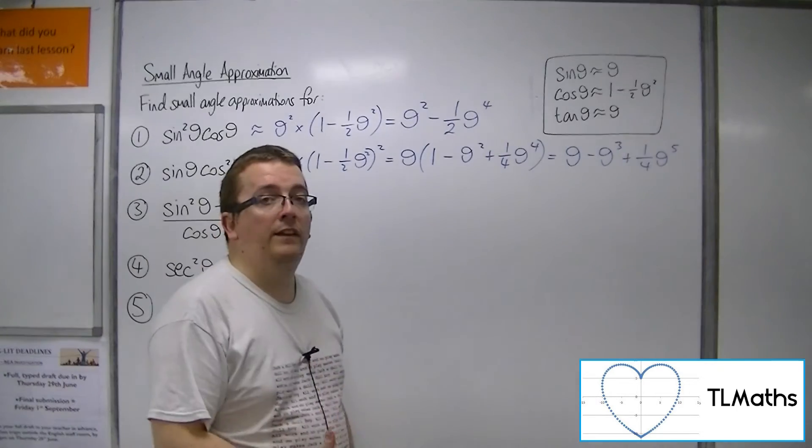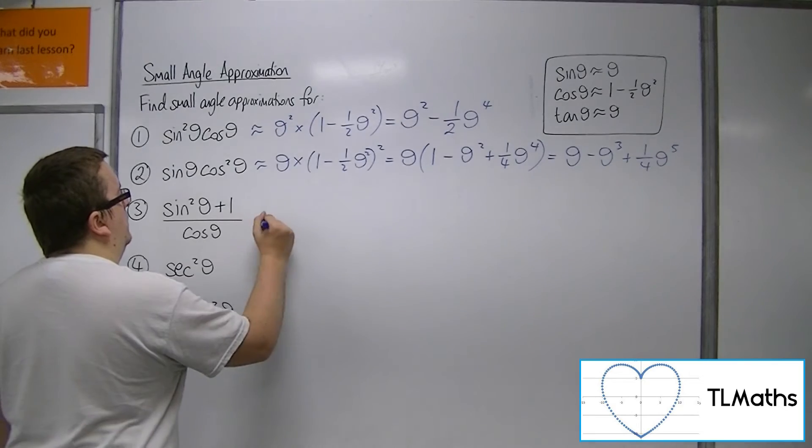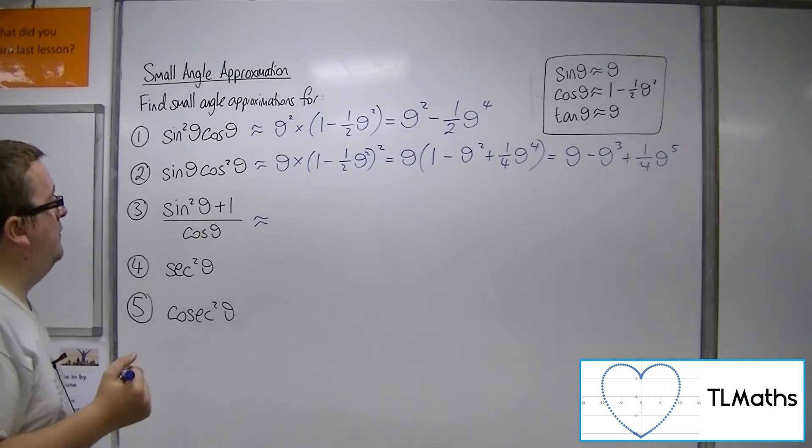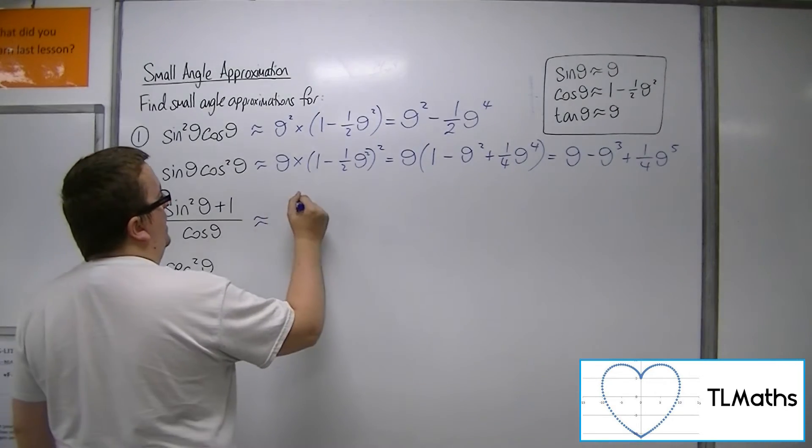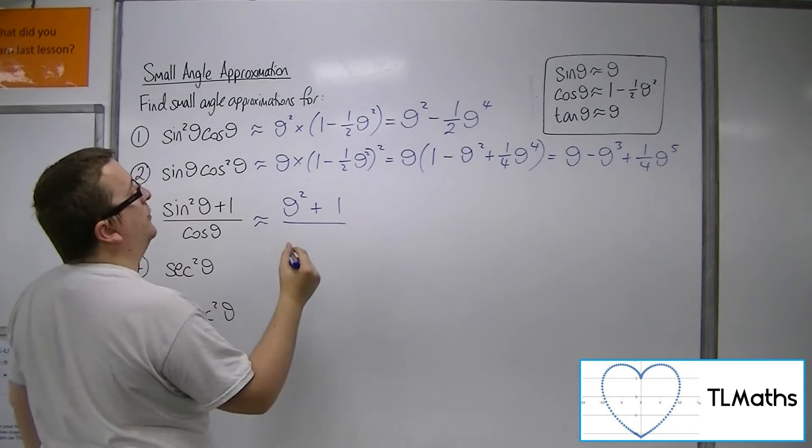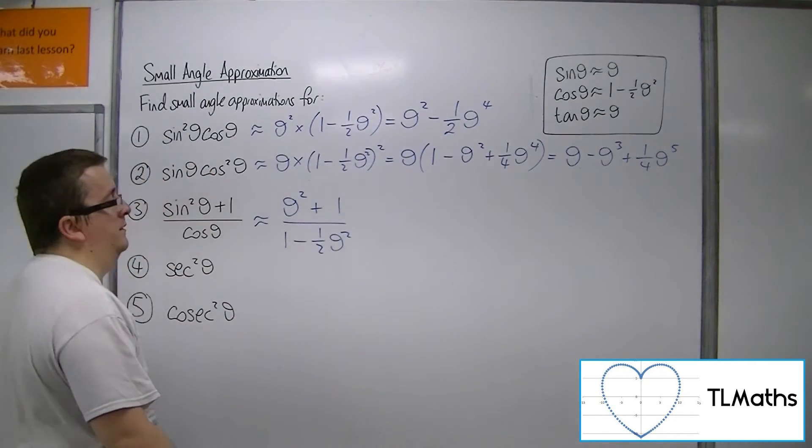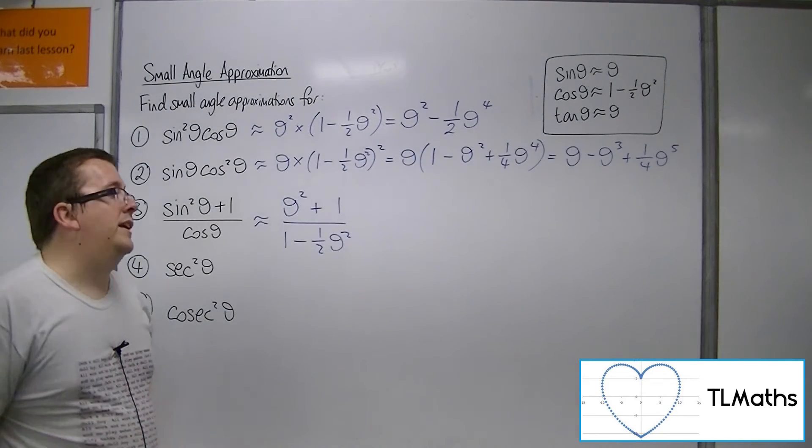So sine squared theta plus 1 over cos theta, well we would have theta squared plus 1 over cos theta, which is 1 take away 1 half theta squared. And that's as good as I can get it, OK.